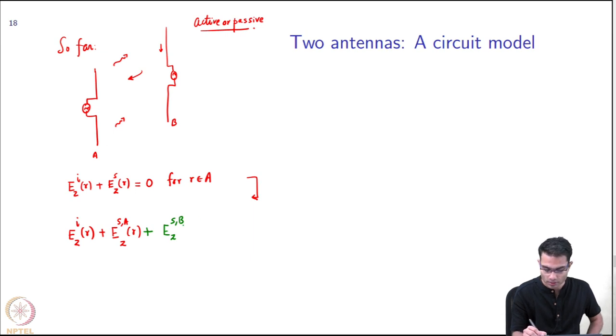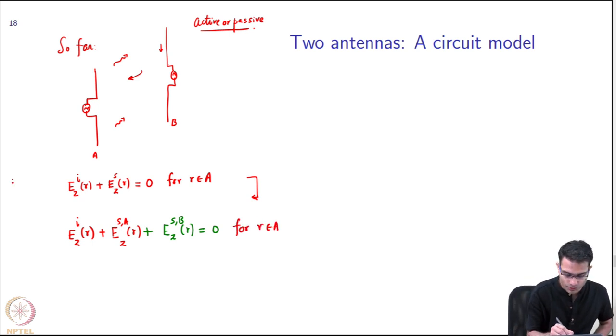Now there is going to be a plus E_z^s for scattered - the field scattered by antenna B. This was single antenna and this is both antennas.